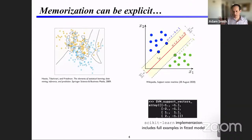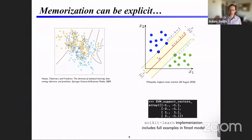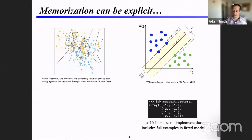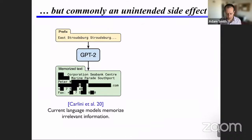Let's start by talking about what we mean by memorization. There are lots of settings where memorization is explicit in the way we think about the model. For example, a one-nearest-neighbor classification model classifies a new point according to the label of the nearest point in the training dataset — essentially the description of the classifier is a description of the training data itself. This can sometimes be more subtle, like in the case of support vector machines, where the result is described in terms of a subset of data points called support vectors.